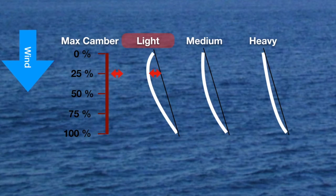As the wind increases, you will want to flatten the sail, which moves the maximum camber point back. In this case, 50 percent from the front of the sail is a good starting point for medium conditions.